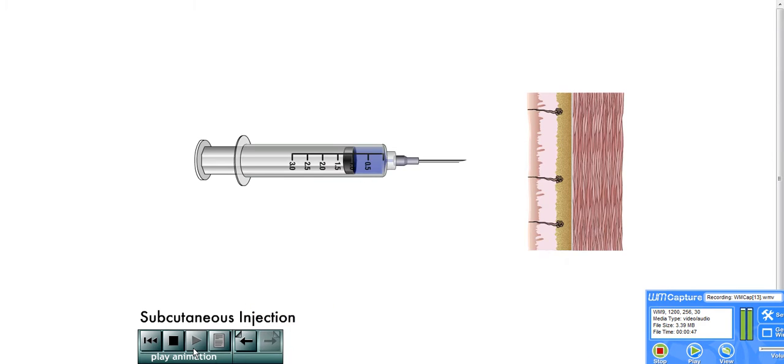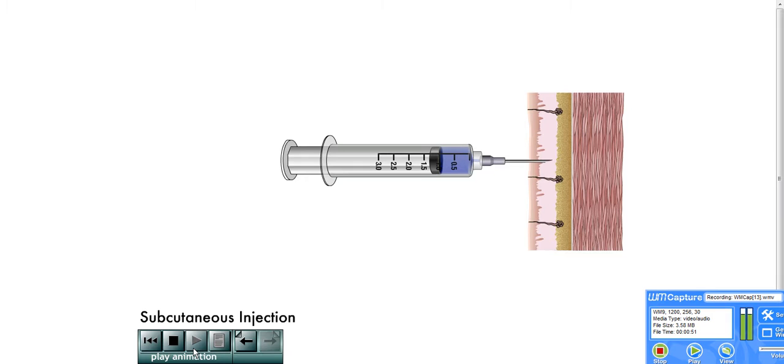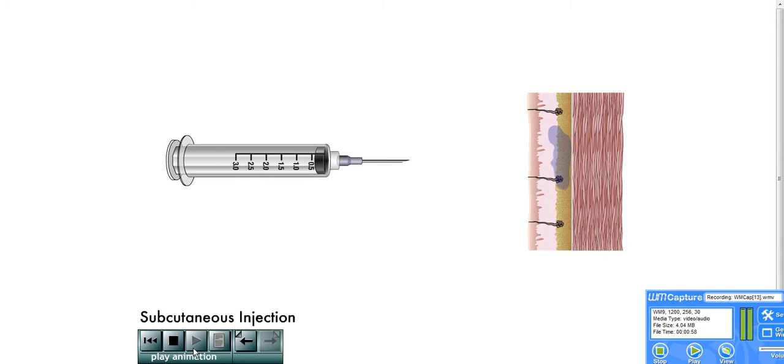For a subcutaneous injection, dependent upon personal choice, agency policy, and type of medication, aspirate by pulling back on the plunger, and then slowly depress the plunger, injecting the solution into the subcutaneous layer.